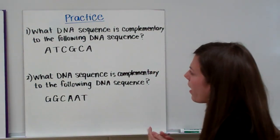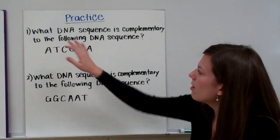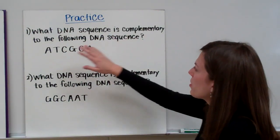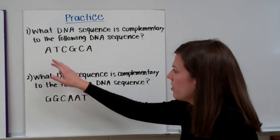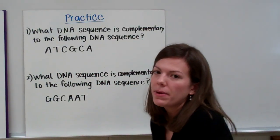Alright, let's do some practice now. You need to remember which bases bind together, which ones are complementary. What DNA sequence is complementary to the following DNA sequence? They give you A, T, C, G, C, A. So you have to remember your base pair rule.